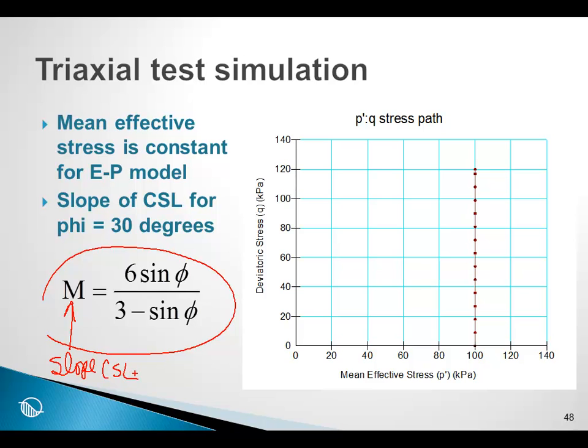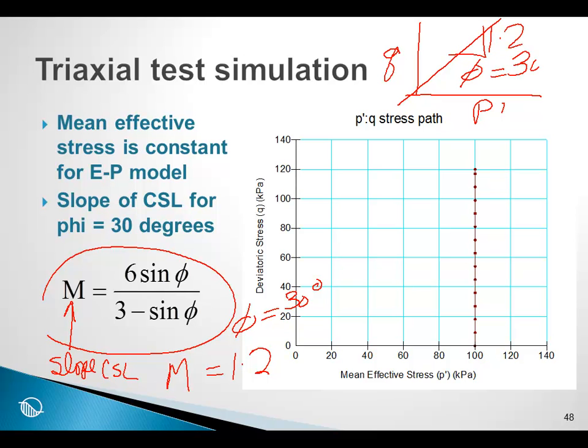And if phi is 30 degrees, then M, the Greek letter mu, is equal to 1.2. So on a Q-P prime plot, the slope here is 1.2 when phi is equal to 30 degrees.